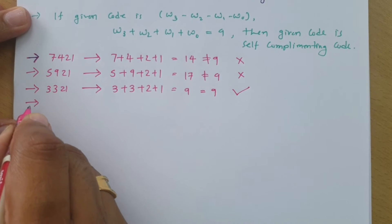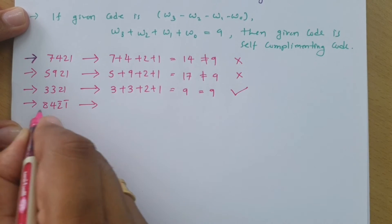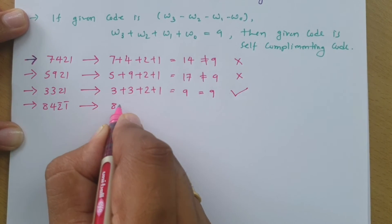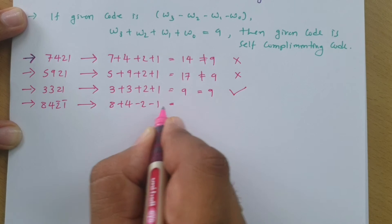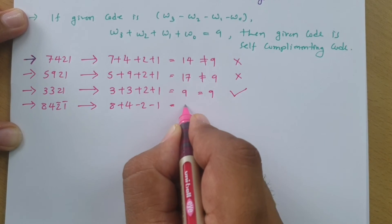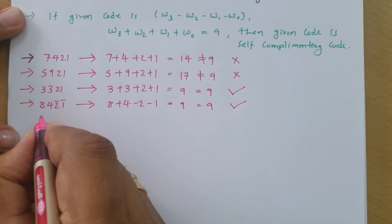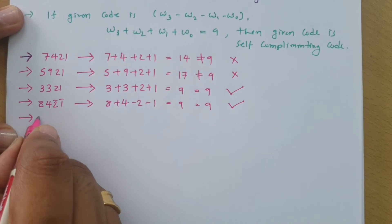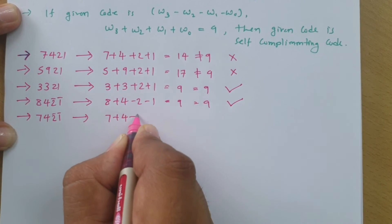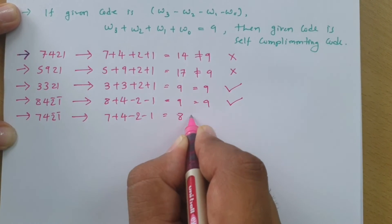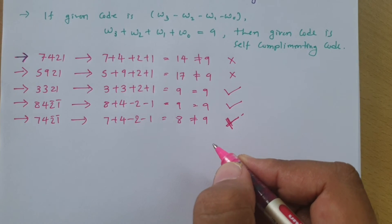For the 842̄1̄ code — where bar means negative — the addition of weightages is 8 plus 4 minus 2 minus 1, which equals 9. So it is equal to 9, meaning it is a self-complementing code. One more example: 742̄1̄ code. 7 plus 4 minus 2 minus 1 equals 8, which is not equal to 9. We can say this is not a self-complementing code.